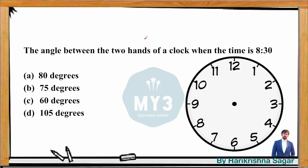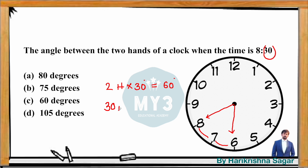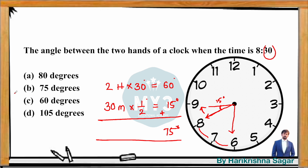Next question: angle at 8:30. Using the analytical approach — the hour hand points towards 8 and the minute hand points towards 6, giving 2 hours of gap, so 2 × 30 = 60 degrees. There are 30 minutes of tilt: 30 × 0.5 = 15 degrees. At 8:30, the hour hand moves towards 9, so this tilt goes outside — we add: 60 + 15 = 75 degrees.